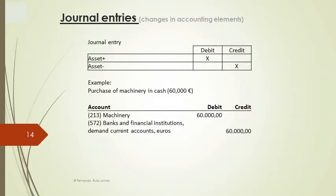Suppose now the example of a company which buys machinery for manufacturing purposes, paying €60,000 in cash. We recognize the increase in the asset machinery as a debit for €60,000, and at the same time we write down the decrease in the asset cash as a credit for €60,000 as well.